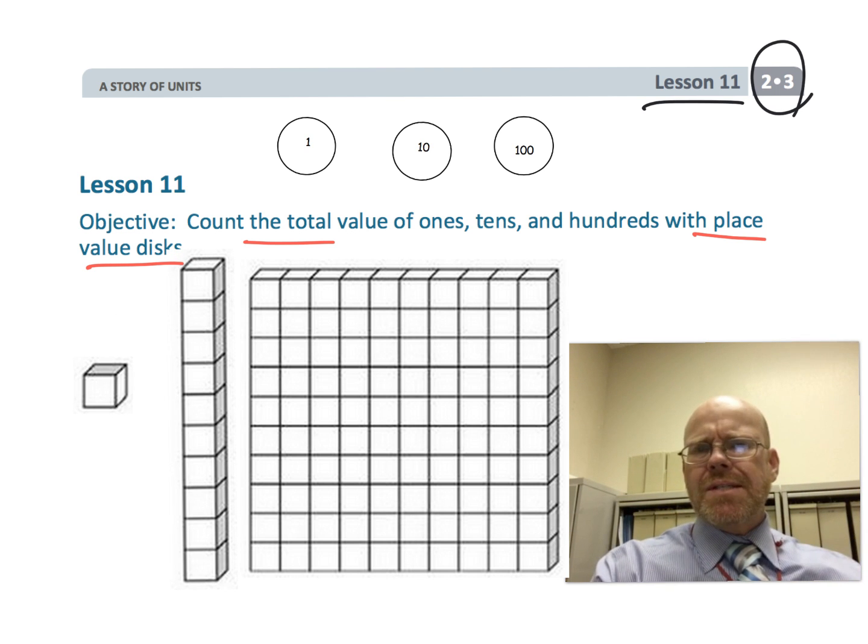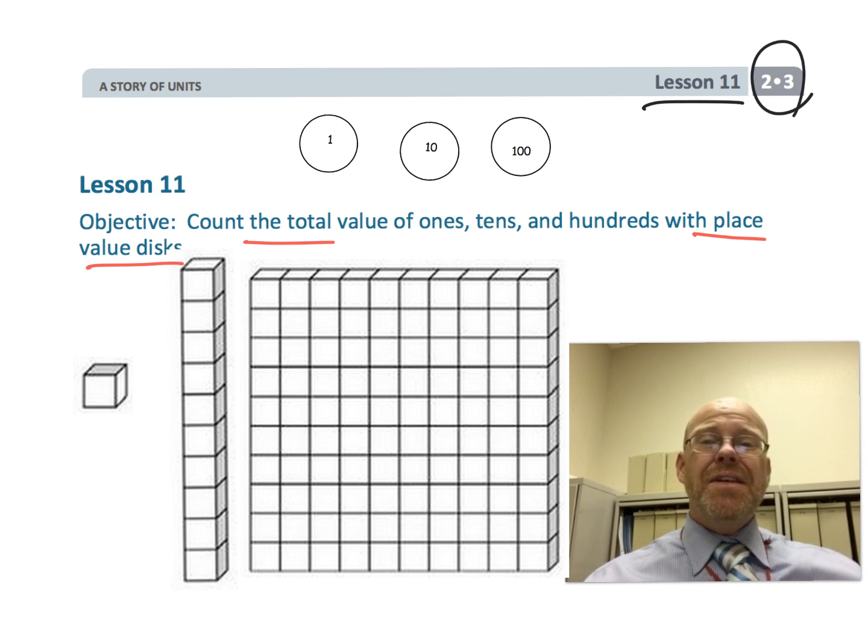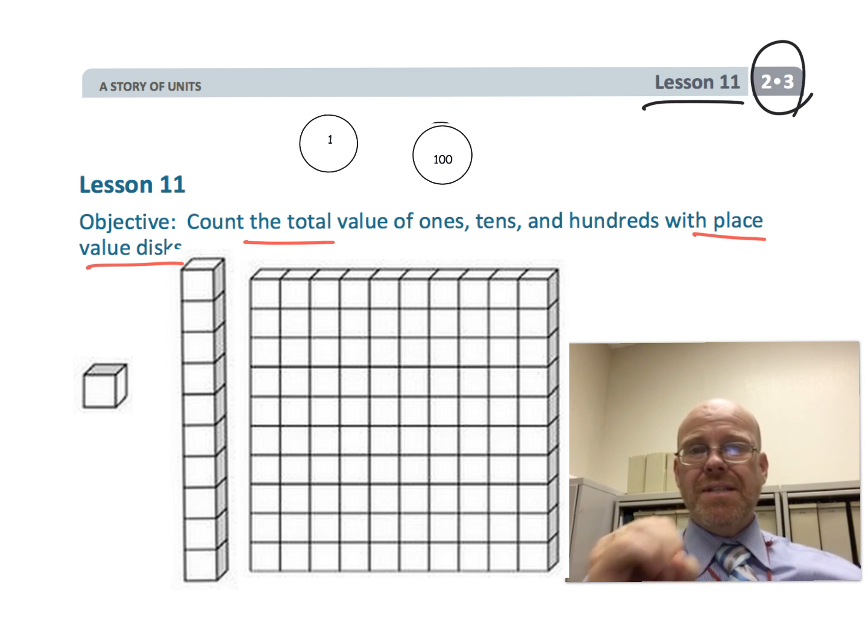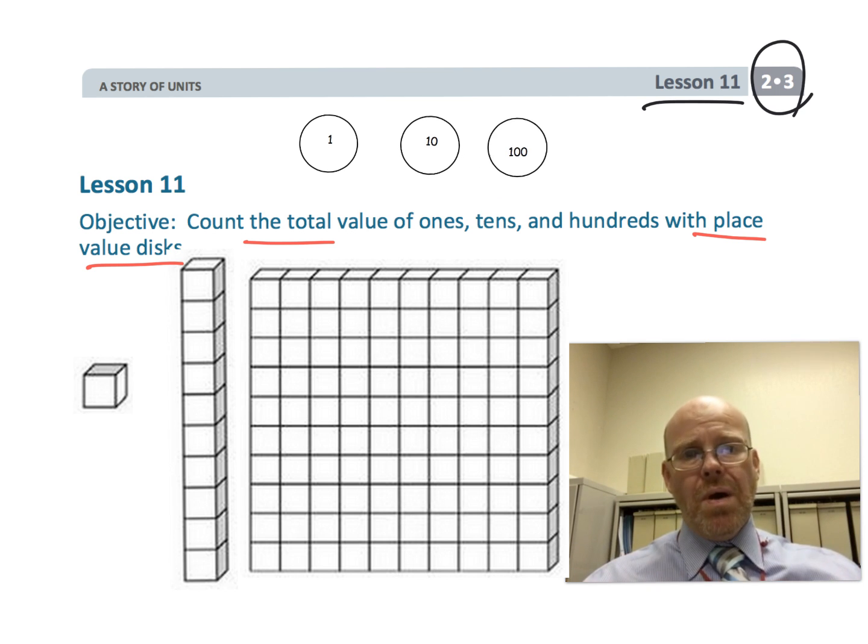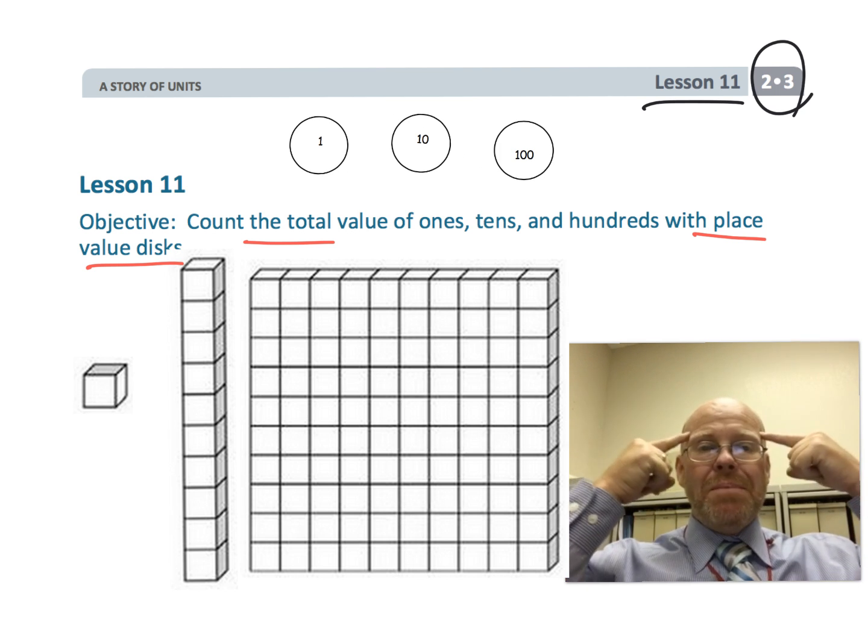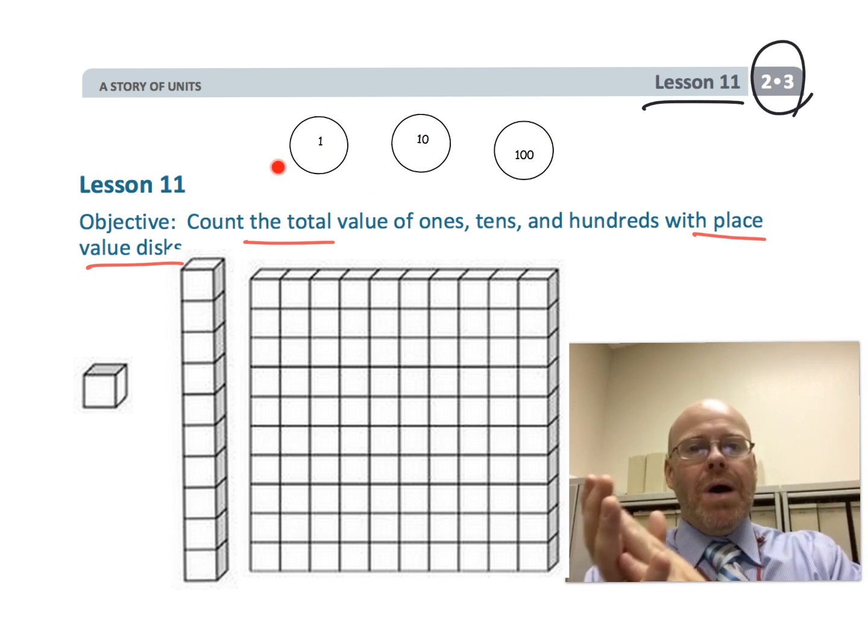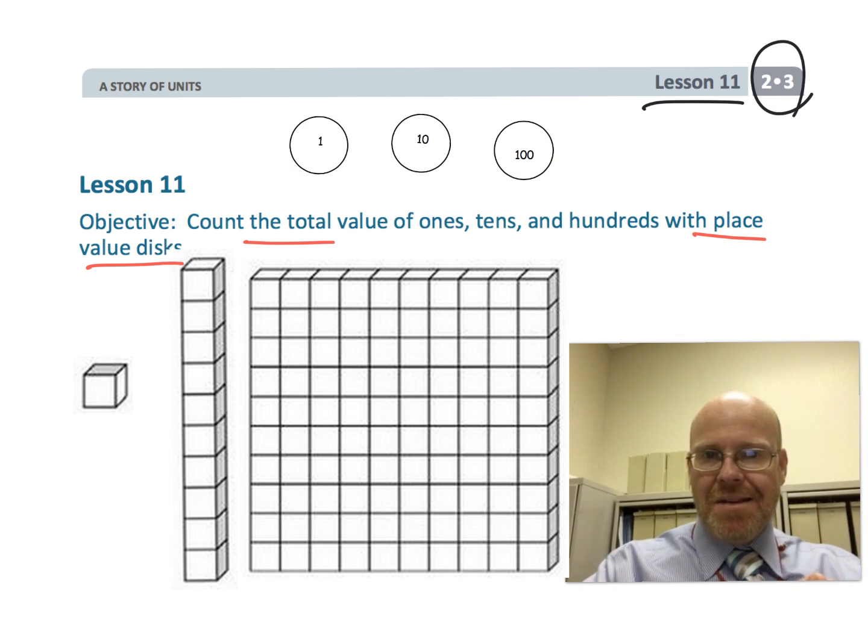The place value disks, on the other hand, they all look basically the same. The difference is that they're labeled differently - hundred, ten, and one. So what distinguishes the difference in terms of size becomes a little bit more abstract. It's in our mind that the 1 is a tenth as big as a 10 and the 10 is a tenth as big as a hundred.